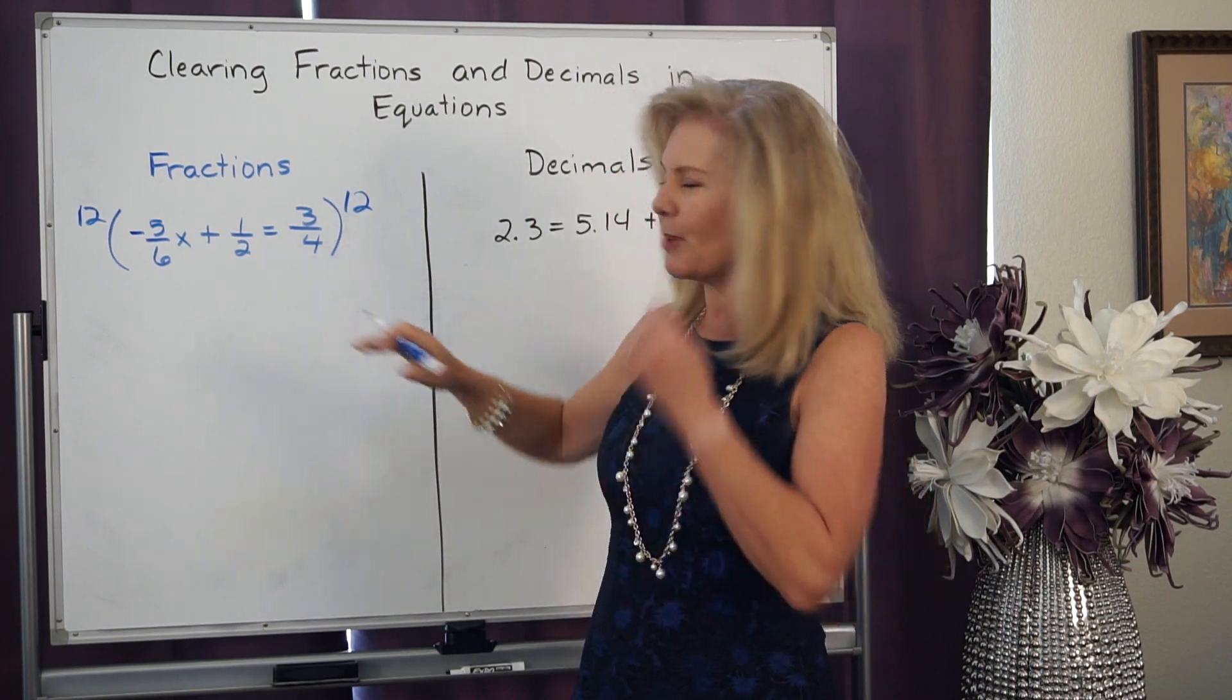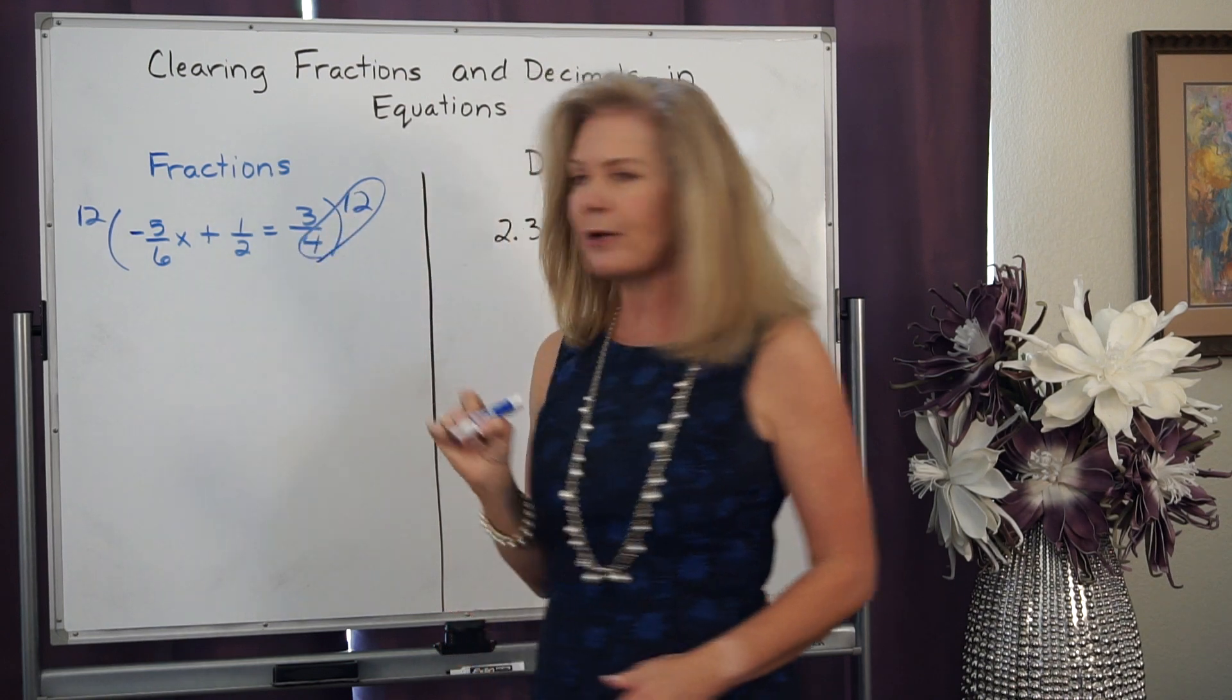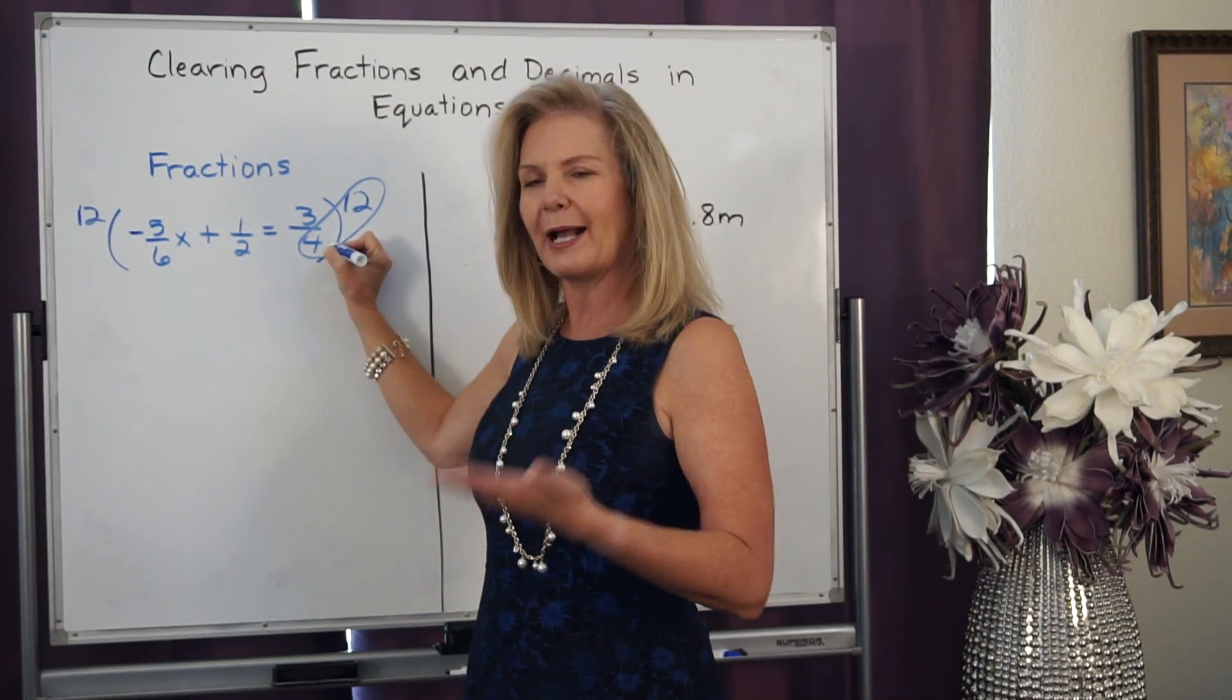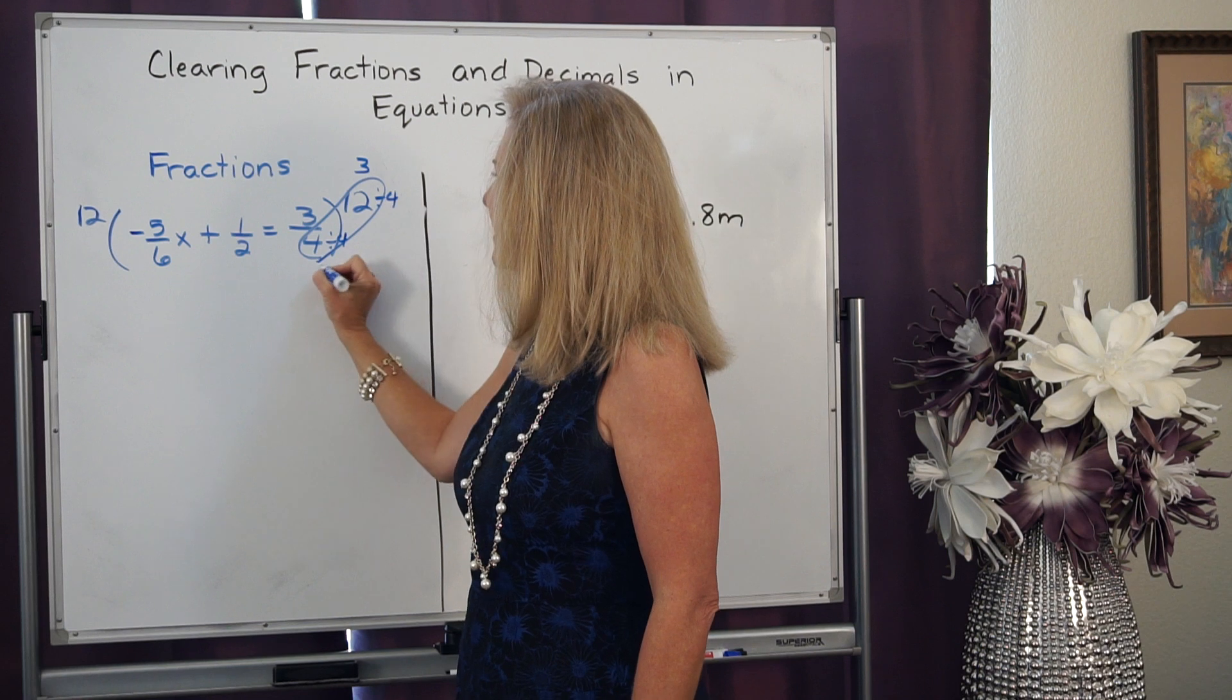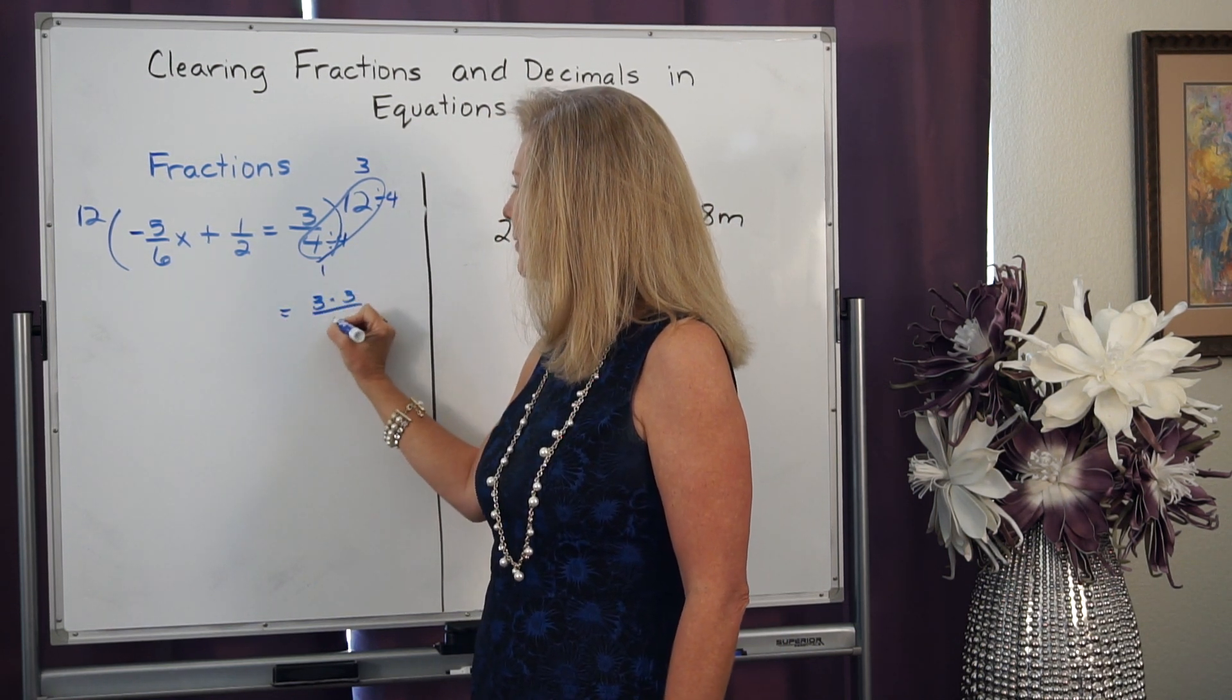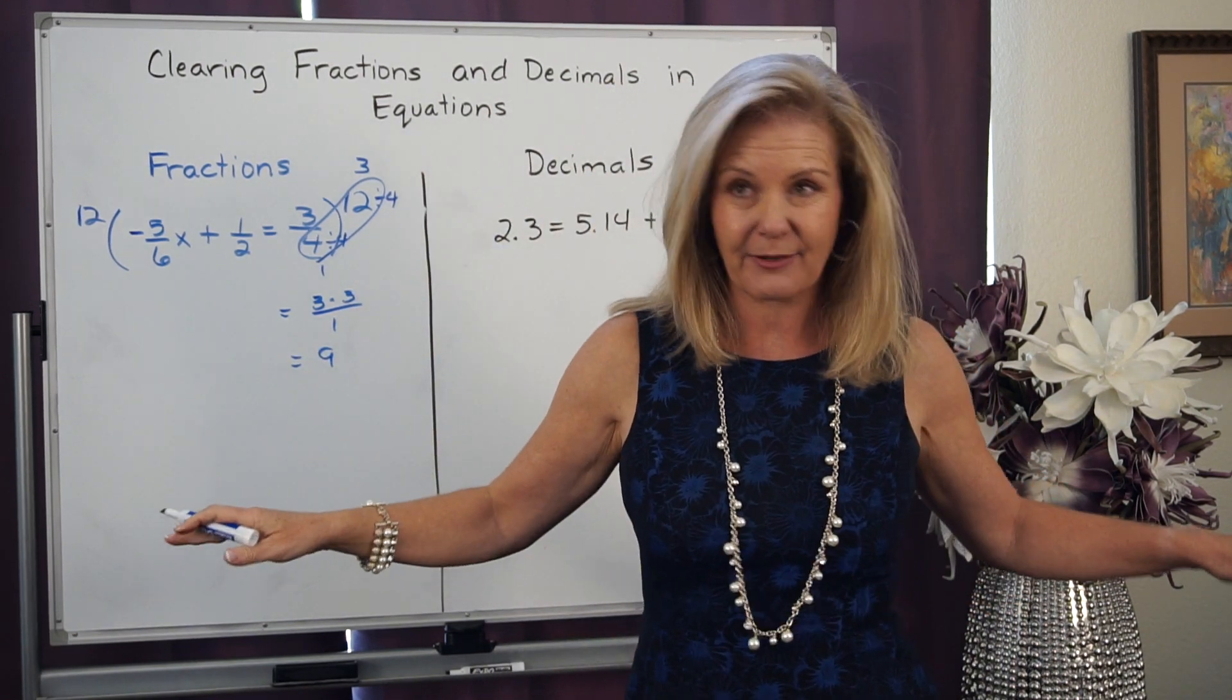Now, remember, when I multiply that, that denominator can be reduced out of that numerator of 12 by thinking about what can I divide into both of them. So I can divide this by 4 and this by 4. That becomes 3. That becomes 1. So really, this becomes a new fraction of 3 times 3 over 1, which is 9. I just got rid of the fractions.